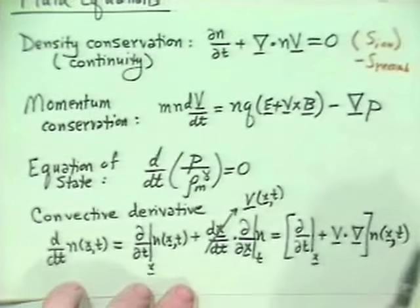By Gauss's law, the volume integral of the divergence of something converts to a surface integral. So we get the surface integral of nV dotted into the area element, which is the flux of particles through the surface. The total time rate of change of the number of particles in the volume equals the negative of the rate at which they flow out through the surface S.